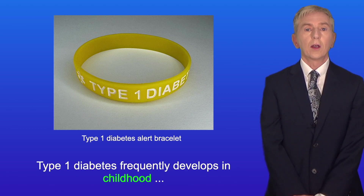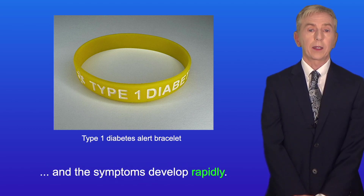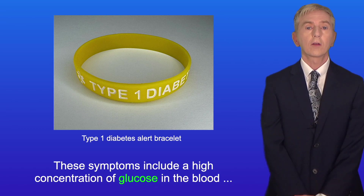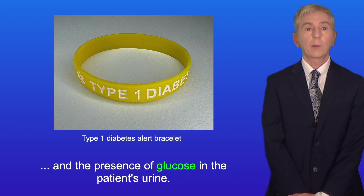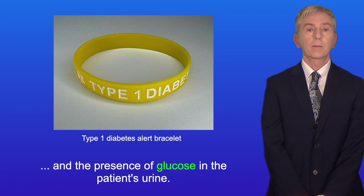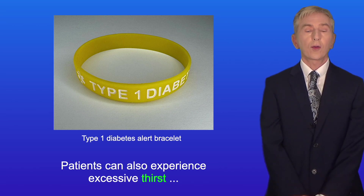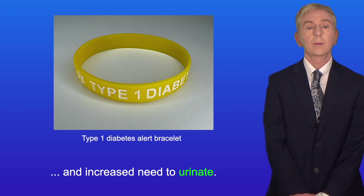Type 1 diabetes frequently develops in childhood, and the symptoms develop rapidly. These symptoms include a high concentration of glucose in the blood and the presence of glucose in the patient's urine. Patients can also experience excessive thirst and an increased need to urinate.